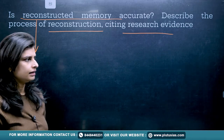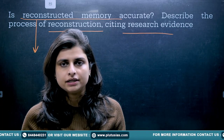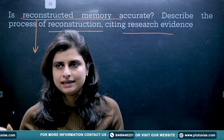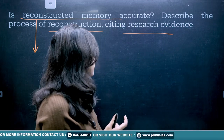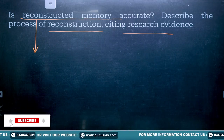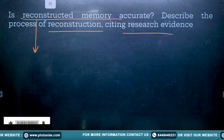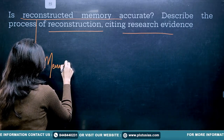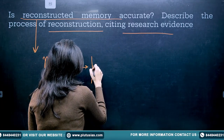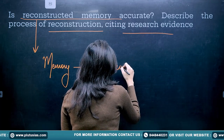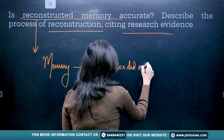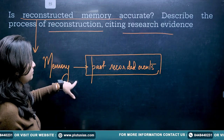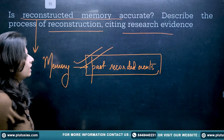The point is, reconstructed memory means the information that you are recalling — information that was stored in your memory when you put light on it. So whether reconstructed memory is accurate or not, let's begin. First, you need to explain what reconstructed memory is: it is memory which is able to recall past recorded events.